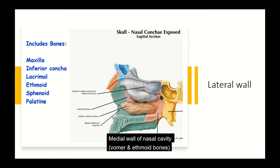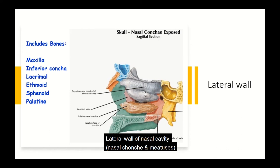The lateral wall of the nasal cavity is characterized by bony shells known as the conchae — a superior concha, middle concha, and inferior concha. The air channels created underneath these conchae are known as the meatuses: superior, middle, and inferior. The conchae increase the surface area of the respiratory mucosa, aiding in warming and humidifying the air as it enters from the external environment into the nasal cavity.